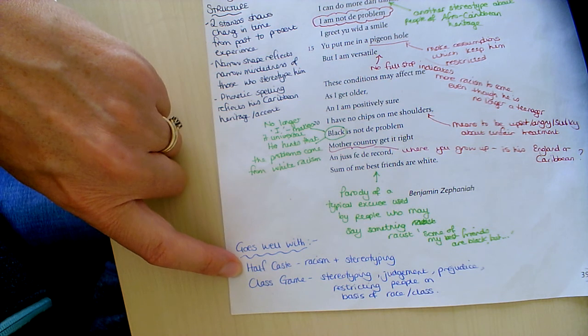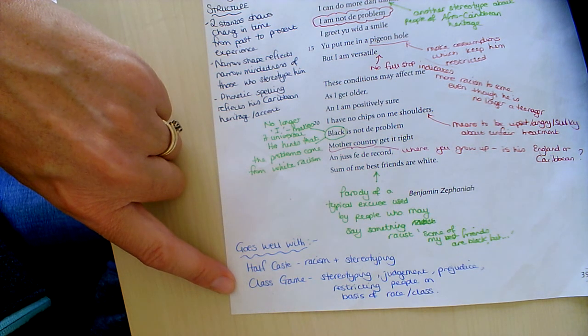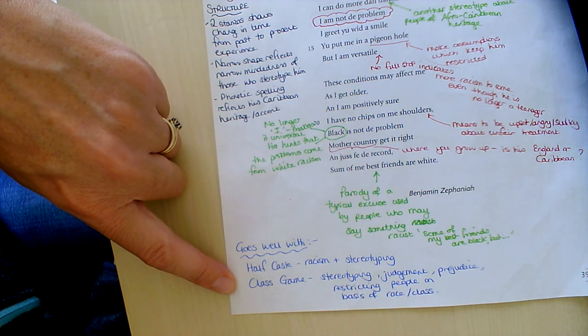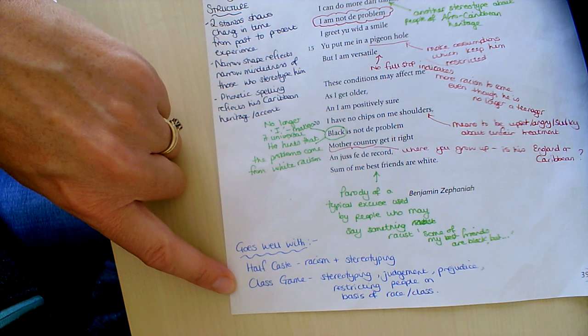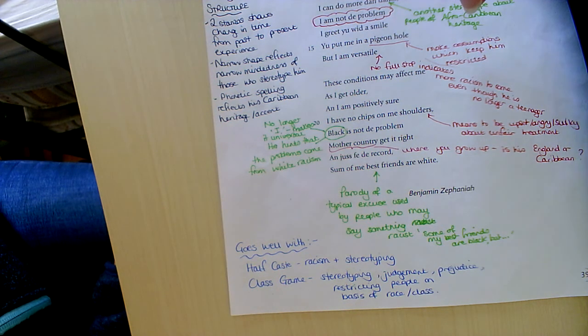It also goes well with Class Game because Class Game, like both of the race poems, is about stereotyping and judgment and prejudice. And they're both about restricting people on the basis of either race or class. So that's Class Game.